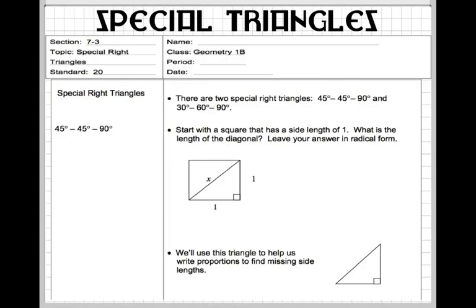All right, let's look at special triangles. There's two types of special triangles: the 45-45-90 and the 30-60-90. We'll start with the 45-45-90. That's the one we're going to talk about first.